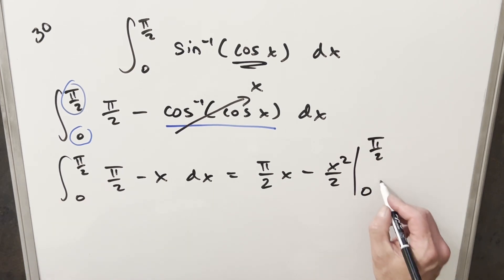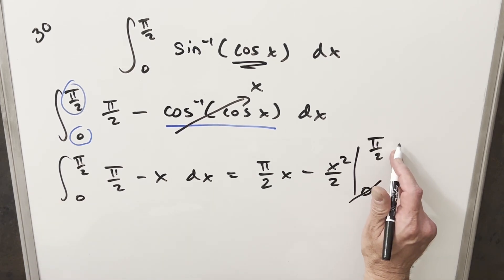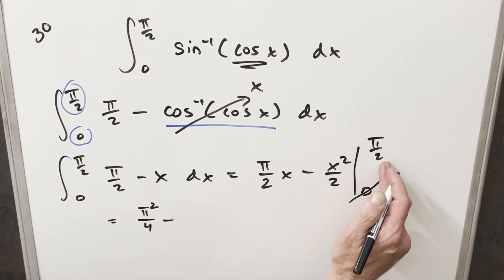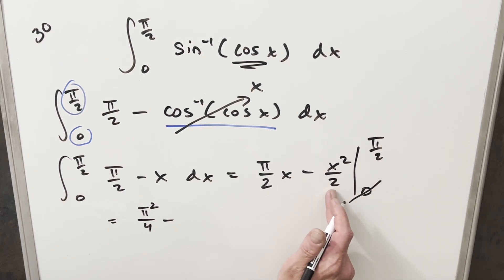When we plug 0 in here everything's gonna be 0, so that's going away. We just need to evaluate at π/2. For this first piece we're gonna get π²/4, and then plugging π/2 in here we're gonna get π²/4 divided by 2, which gives me π²/8.